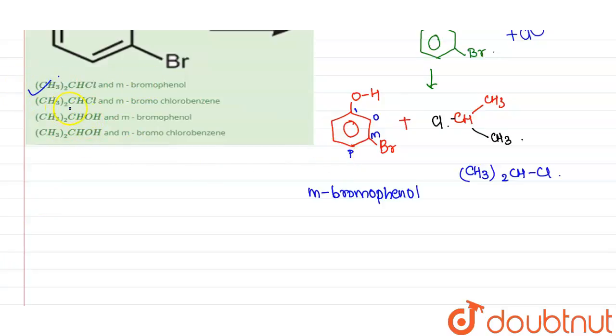Now the second one is (CH3)2CHCl. This is correct. But after here it is written meta-bromochlorobenzene. So this is wrong.